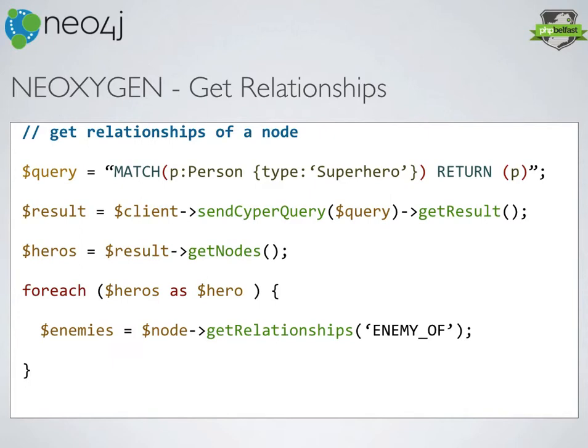Not only nodes — we might want to find out what relationships exist on a node. Here we match a person of type superhero, get that list of nodes and assign it to an array of heroes. As we loop through each hero, we want to find his enemies. We use getRelationships and define the relationship we're looking for as 'enemy_of'. That gives us a list of the enemy nodes — a very useful way of crawling through your graph.